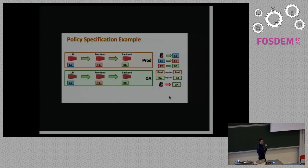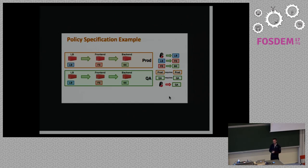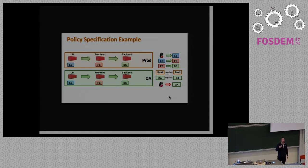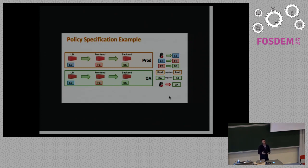On top of that, we can add environments — you can take a policy and apply it to a production environment and a QA environment. The way to do that is simple: you say any endpoint with the label 'production' can only be consumed by another endpoint also labeled 'production', and similarly for 'QA'. This is something very simple to understand — you can build very simple constraints with tools and metadata that everybody understands, and in the backend, all of this gets translated into identities that we can then enforce.